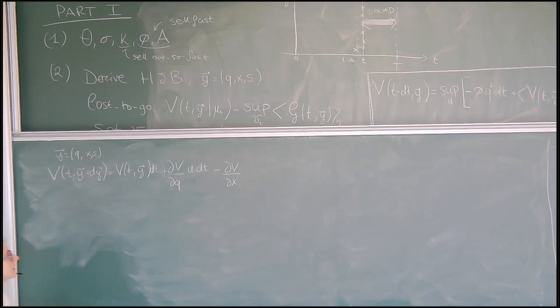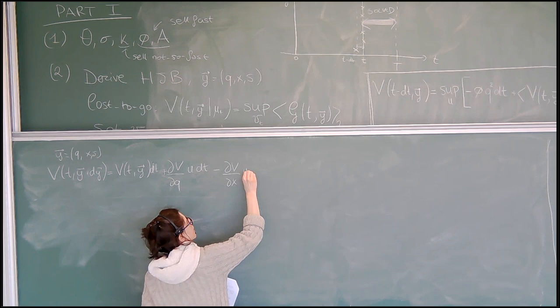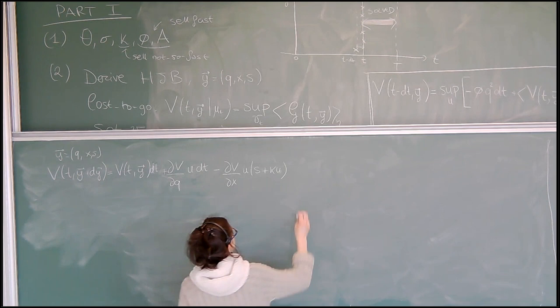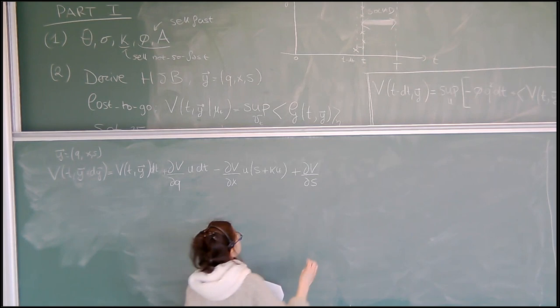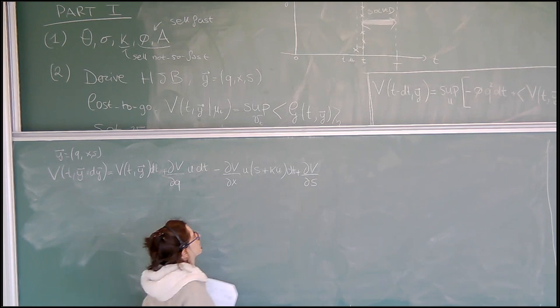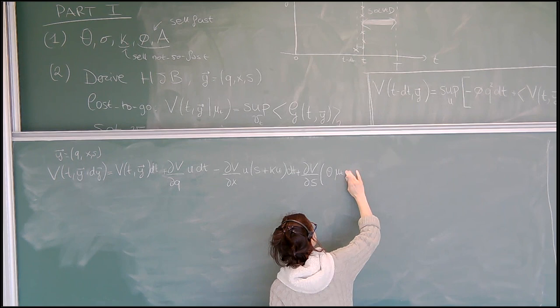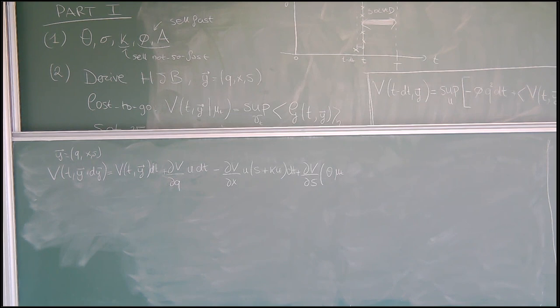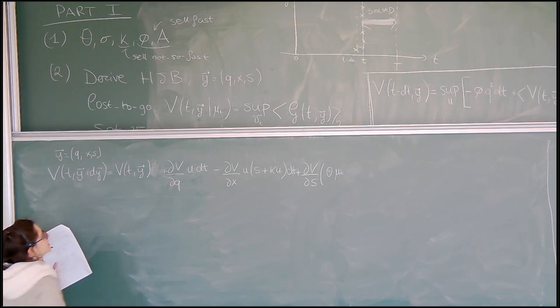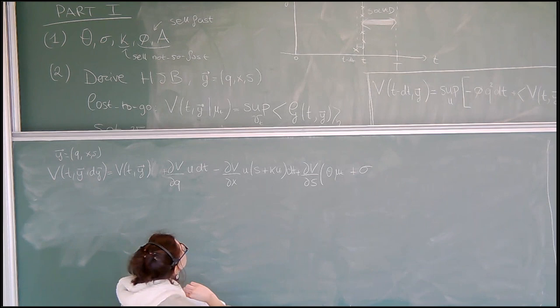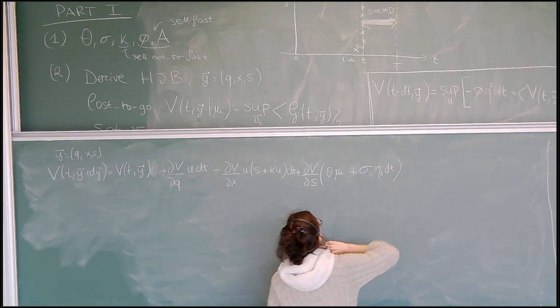Then we have the derivative with respect to X times X-dot times dt. X-dot was minus the velocity times the price S plus kappa*U. Then there is the derivative with respect to S times S-dot times dt. The equation for S-dot was theta*mu(t) plus the noise term: sigma times eta(t) times dt. Now, remember this is white noise, so in the limit where the correlation function goes to a delta function, the noise eta(t) is of order one over square root of dt. Therefore the product eta(t) times dt is of order square root of dt.